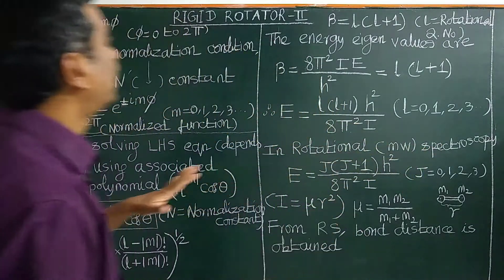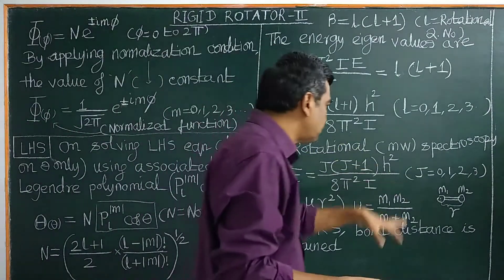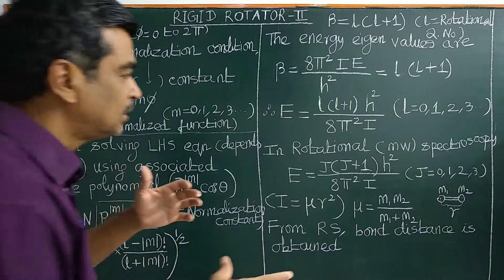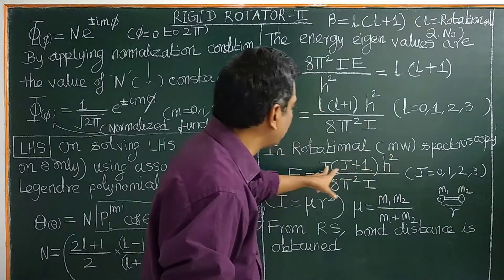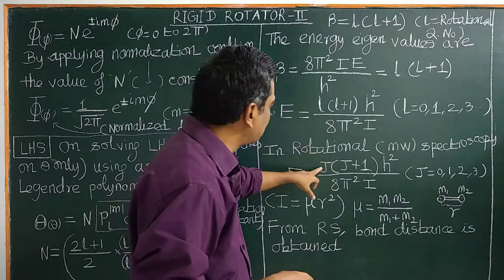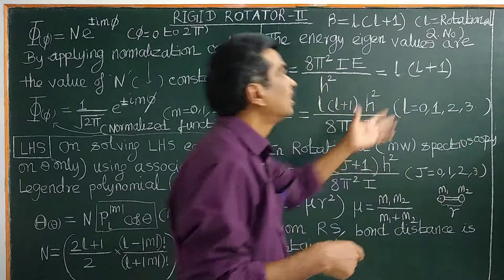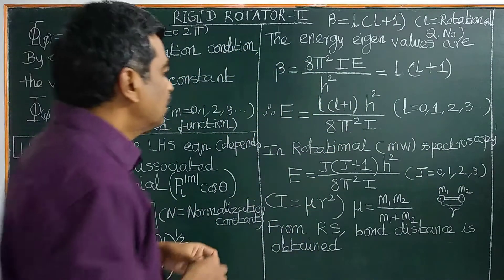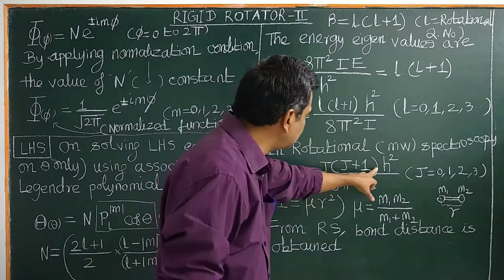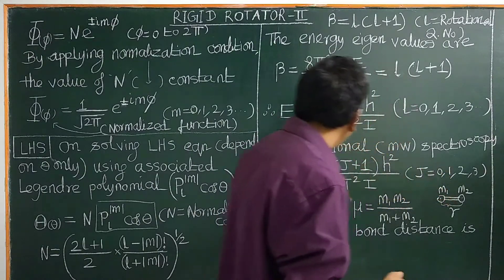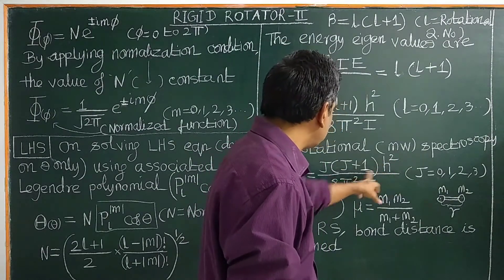The rigid rotator is the principle of rotational and microwave spectroscopy. The rotational energy transitions occur in the microwave region of the electromagnetic spectrum. In microwave spectroscopy, L is equal to J, so E equals J(J+1) H squared divided by 8 pi squared I, where J equals 0, 1, 2, 3. The ground state is J equal to 0, giving E equal to 0. For the first excited state J equal to 1, you get 2H squared divided by 8 pi squared I.